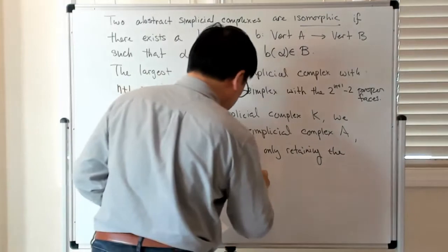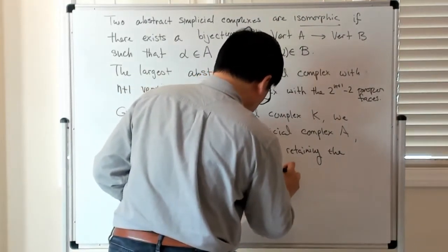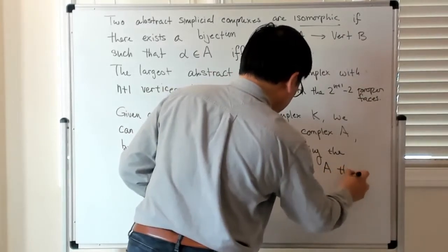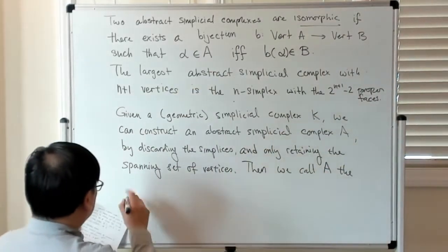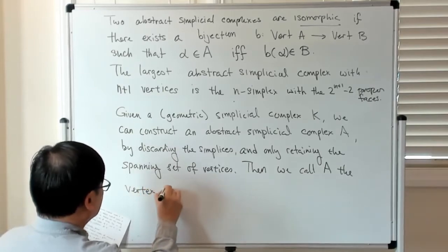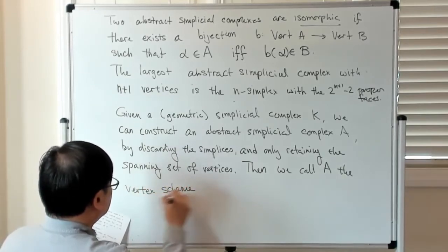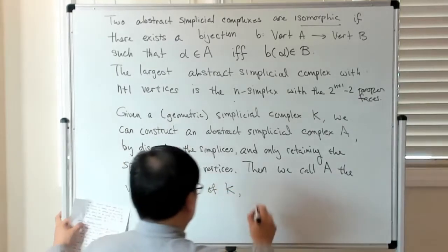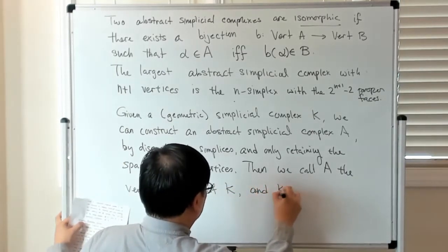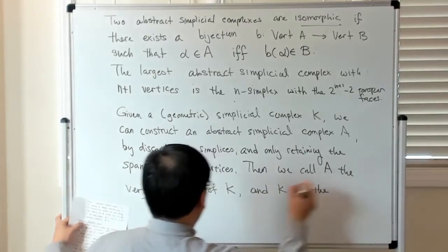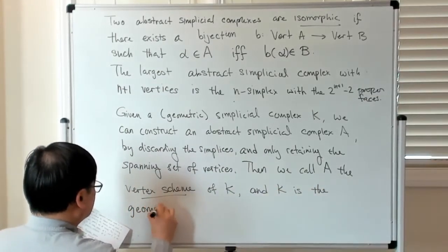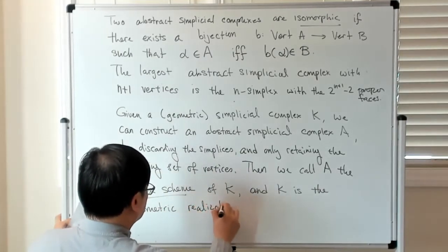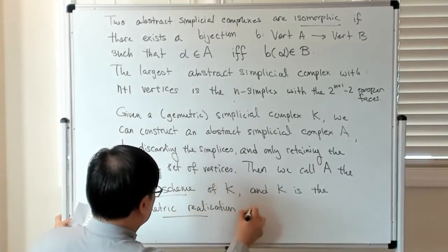We call A the vertex scheme of K, and conversely, K is the geometric realization of A.